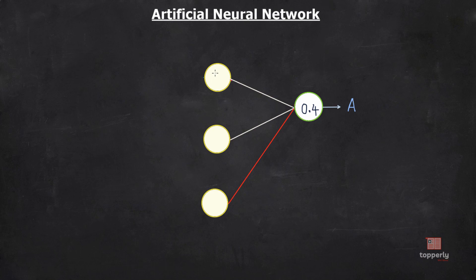Positive correlation means that when the activation of one neuron increases, the activation of the correlated neuron also increases. Negative correlation means that when one neuron's activation increases it decreases the activation of the connected output neuron. So in order to increase the activation of the class A output neuron to its desired value of 1, we should increase the activation of positively correlated neurons and decrease the activation of negatively correlated neurons.